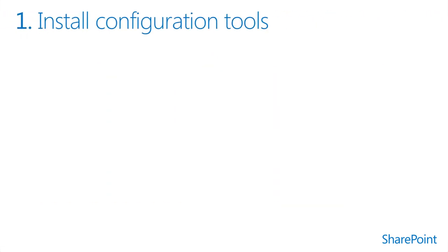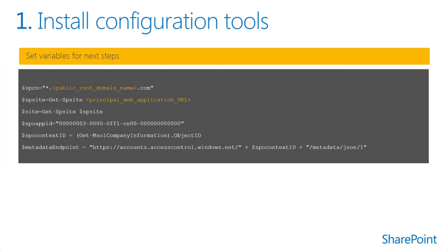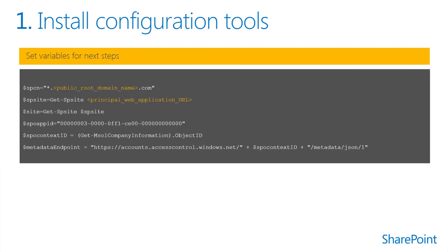In this step, you'll define six variables: the root domain name of your public domain, such as adventureworks.com; the internal URL of your on-premises primary web application; the converted URL of your on-premises primary web application; and the URL used by your Windows Azure Active Directory proxy to connect to your Windows Azure Active Directory tenancy.